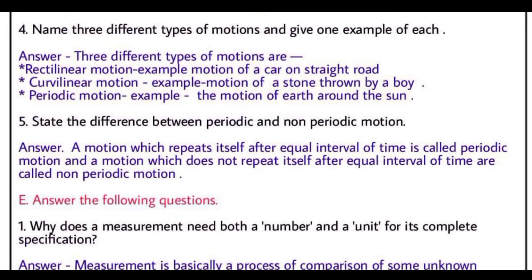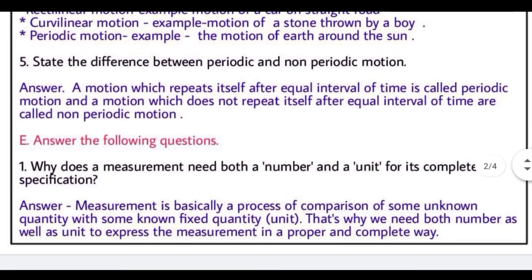The answer is, three different types of motions are: First one is rectilinear motion, example is motion of a car on straight road. Second is curvilinear motion, and the example is motion of a stone thrown by a boy. Jab koi bachha ek pathar ko phekta hai, toh woh curve path se hote huye zameen par girta hai. Next one is periodic motion. Example is the motion of earth around the sun.